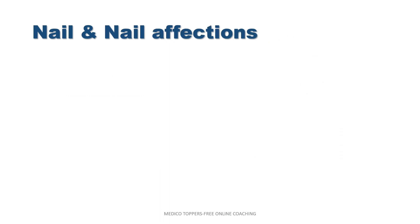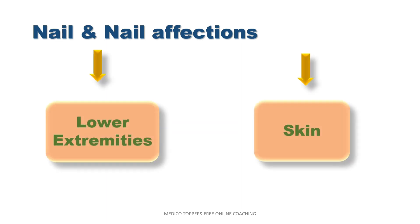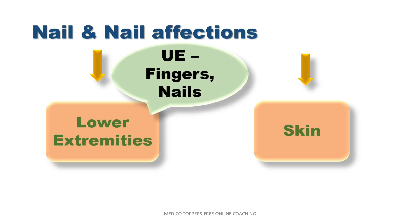Nail and nail affections. Nail is a part of extremities. Nail affections are also in upper extremities. Nail is also in the main rubrics and sub-rubrics — upper extremities, fingers and nails are in upper extremities. For lower extremities, nail will be directly a main rubric.